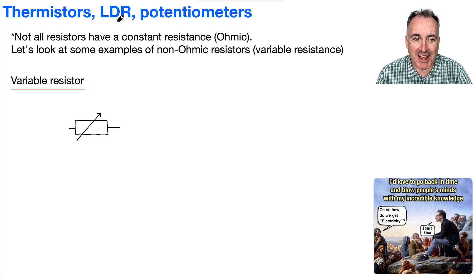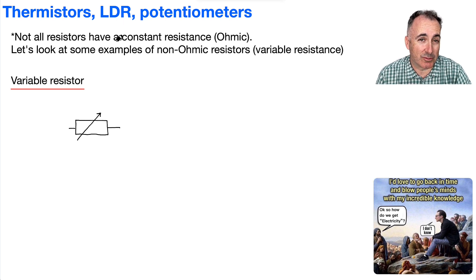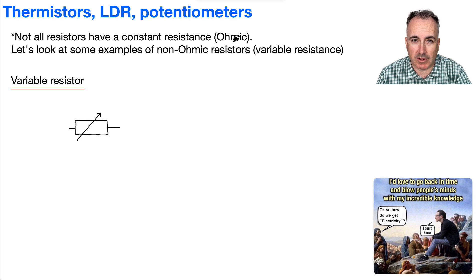Not all resistors have a constant resistance. In other words, they're not all ohmic. Some of them, for example, are non-ohmic with variable resistance.